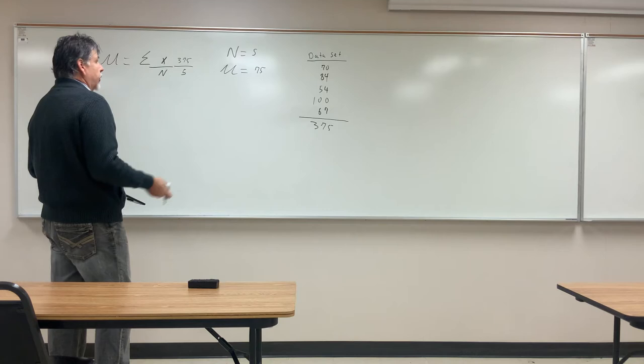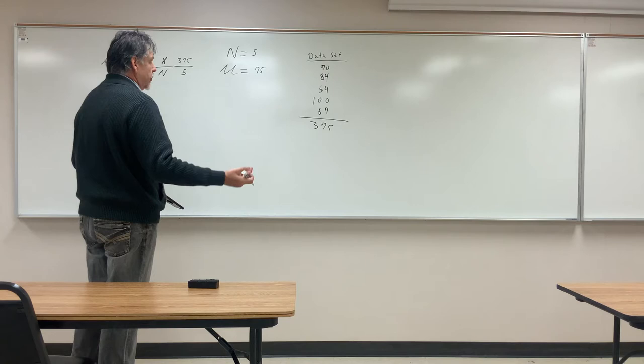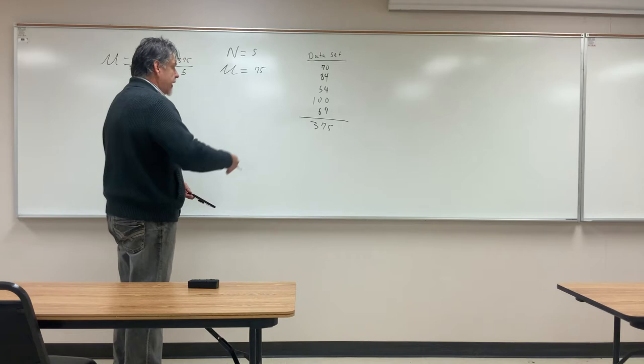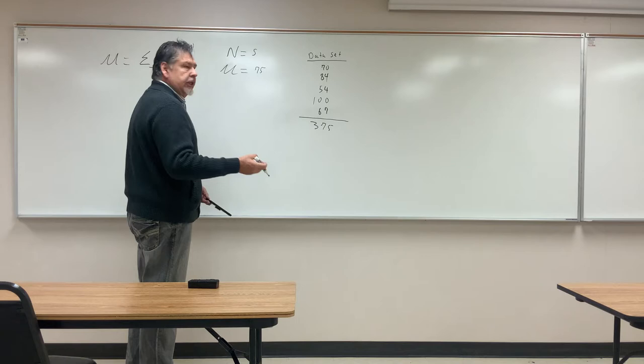Now I also asked you to find the mode. The mode is the value that occurs more often than any other value — the number that is repeated more than any other number. In this case, we don't have a number that is repeated, so we don't have a mode. So: no mode.